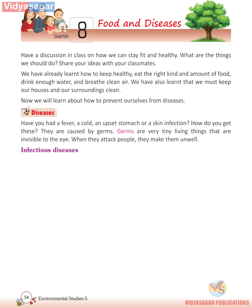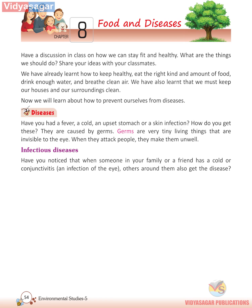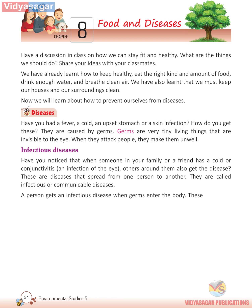Infectious Diseases. Have you noticed that when someone in your family or a friend has a cold or conjunctivitis — an infection of the eye — others around them also get the disease? These are diseases that spread from one person to another. They are called infectious or communicable diseases. A person gets an infectious disease when germs enter the body, and these germs can then spread to other people when they come in contact with the infected person.